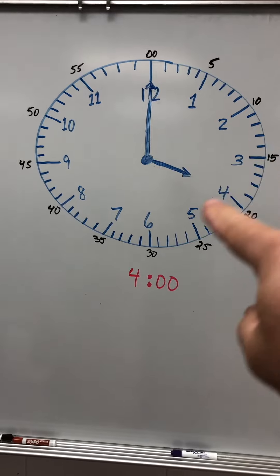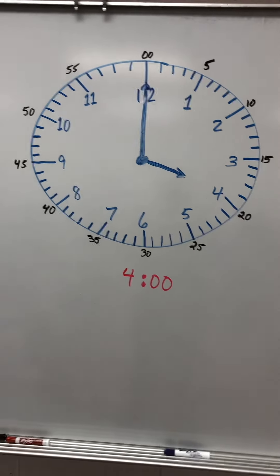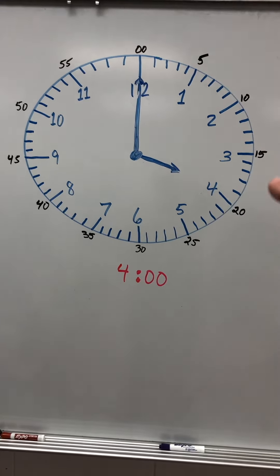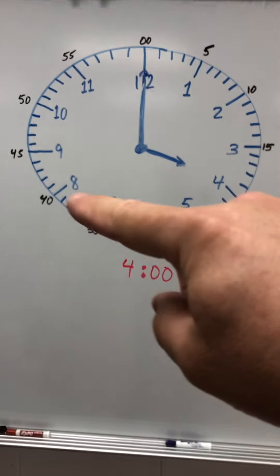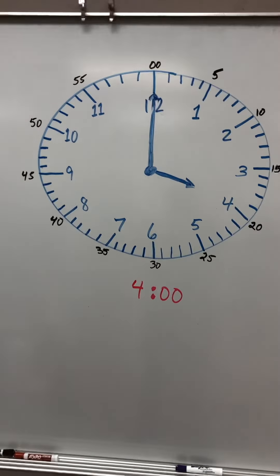So each of the numbers, one through 12, represents five minutes. So you have 5, 10, 15, 20, 25, 30, 35, 40, 45, 50, 55, and 0.